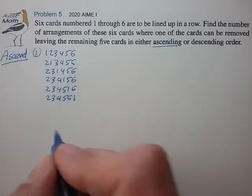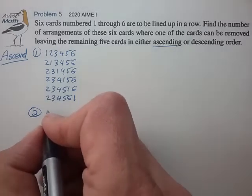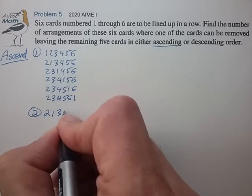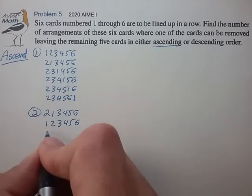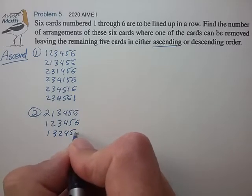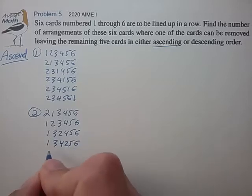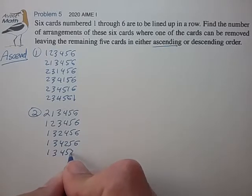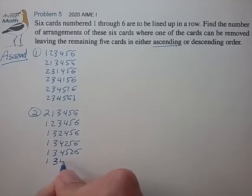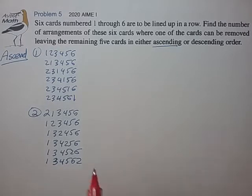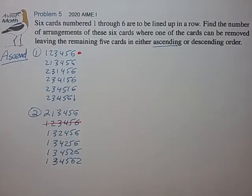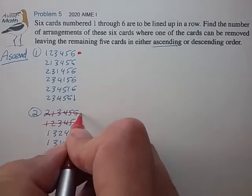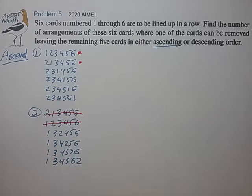Let's see if we try to remove card number 2. Then 2 could be all the way to the left, or moved over one position at a time through six positions. We have some duplicates now that we have to sort out — two of these arrangements were already counted, so let's mark those.